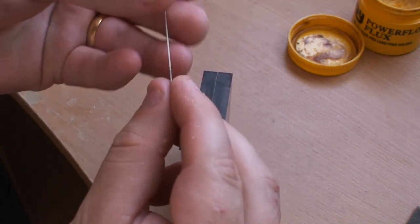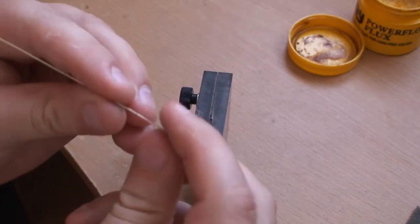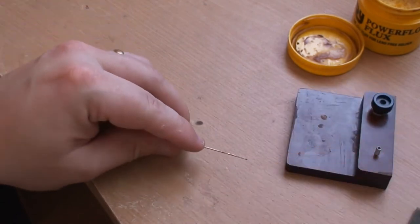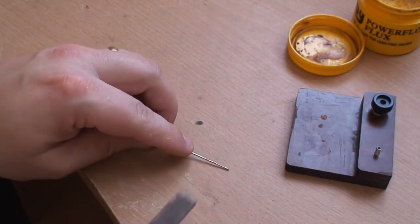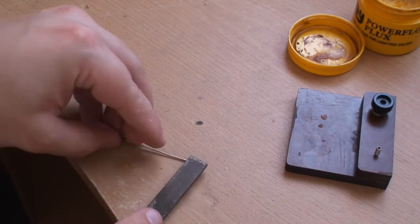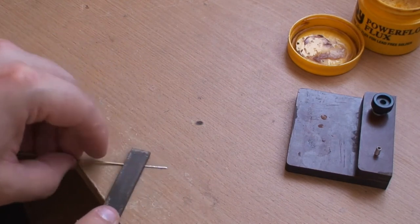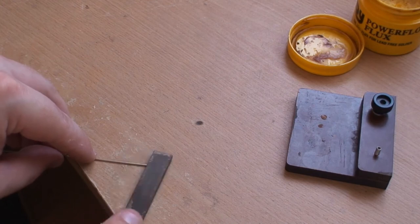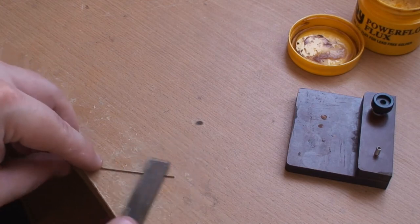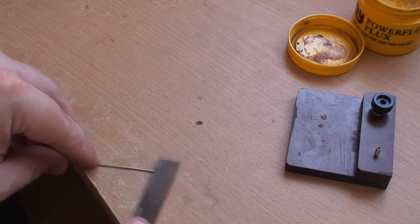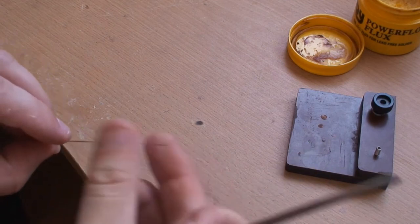And just check it. I'll just clean off the top and the bottom of the rail. Just give it a clean up. And the bottom. It takes off any burr.